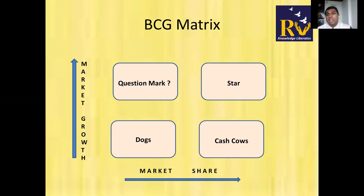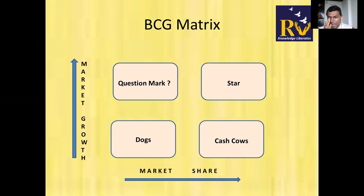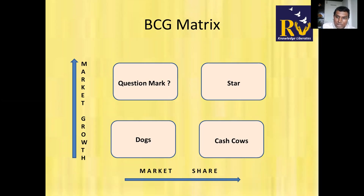You have perhaps 95% market share but the industry isn't growing, so pursuing that last 5% isn't worth the effort. Redirect resources to a star product for better returns. Dogs: the industry market is not growing and your market share was once high but is also declining. Companies still hold Dog products for two reasons: retaining brand value or emotional appeal — they don't want to kill a brand. For example, the MTR restaurant in Bangalore still runs but MTR doesn't pump new investment into that brand.